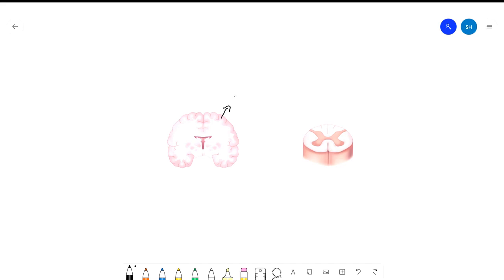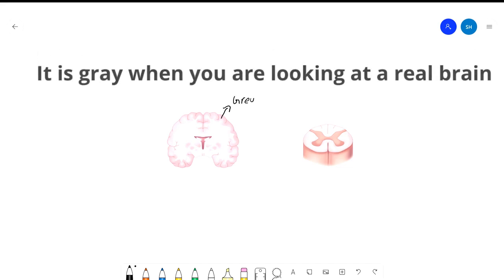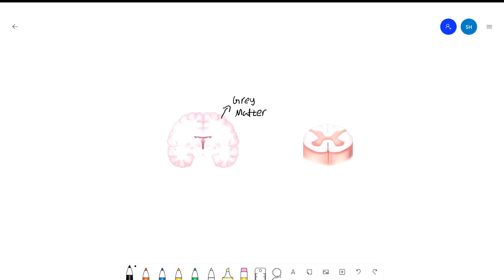Gray matter is not gray in this case but it's pink in color, and there is white matter inside which is white.